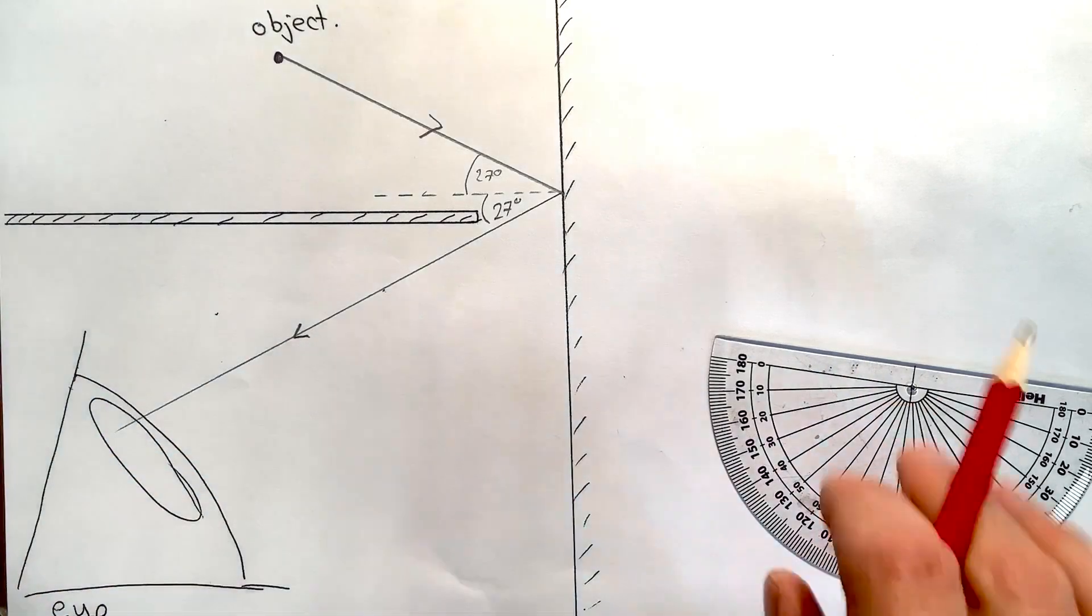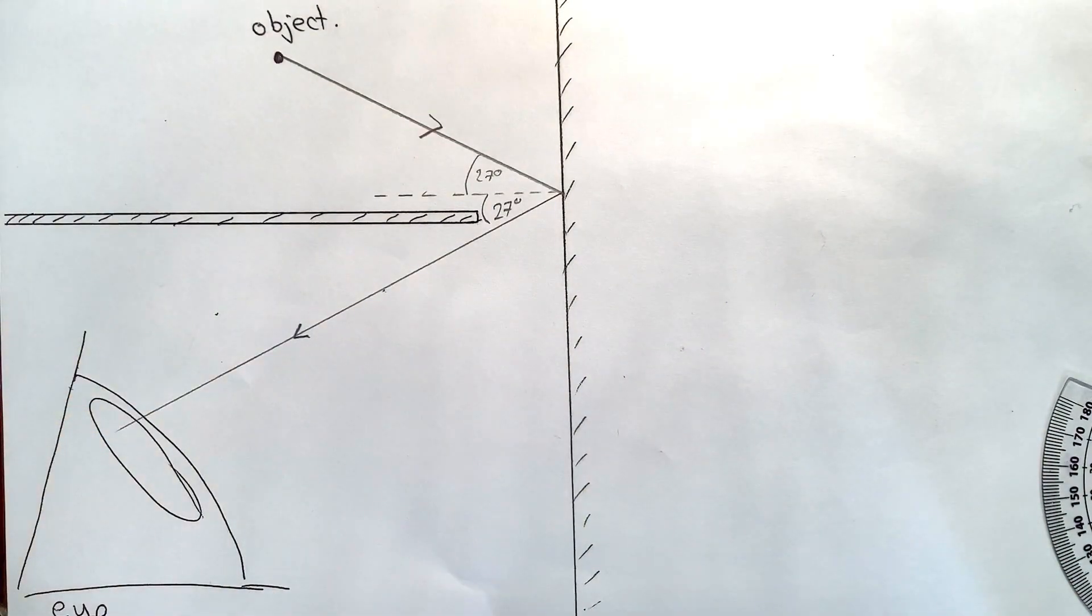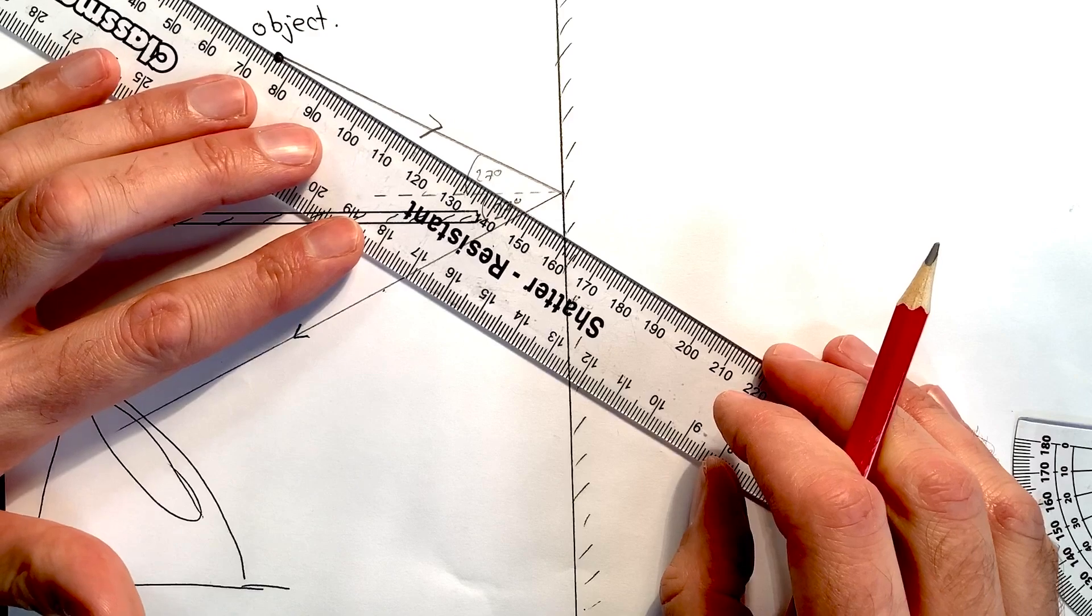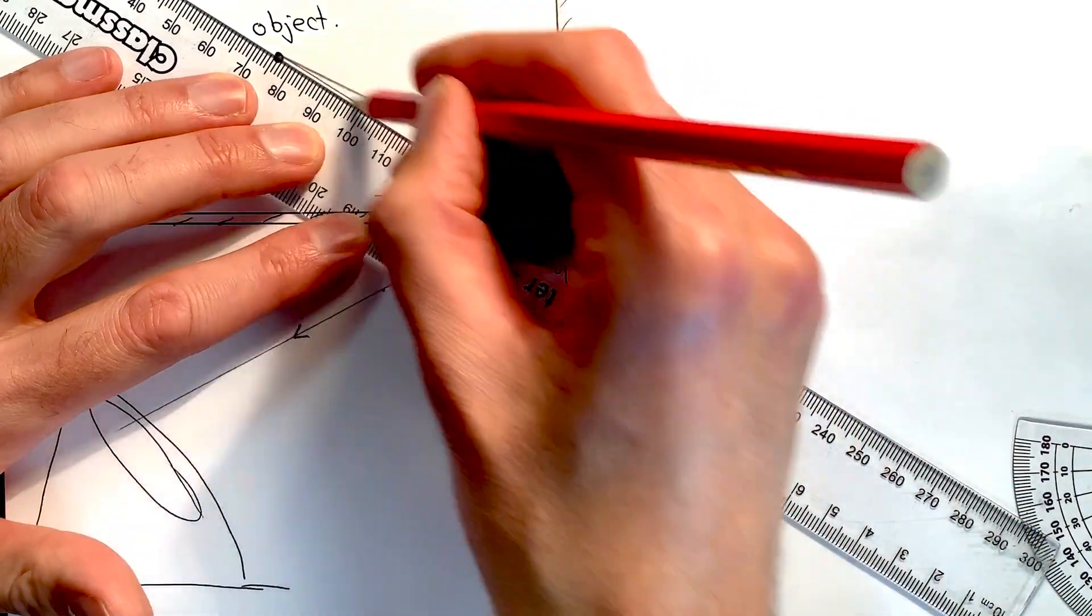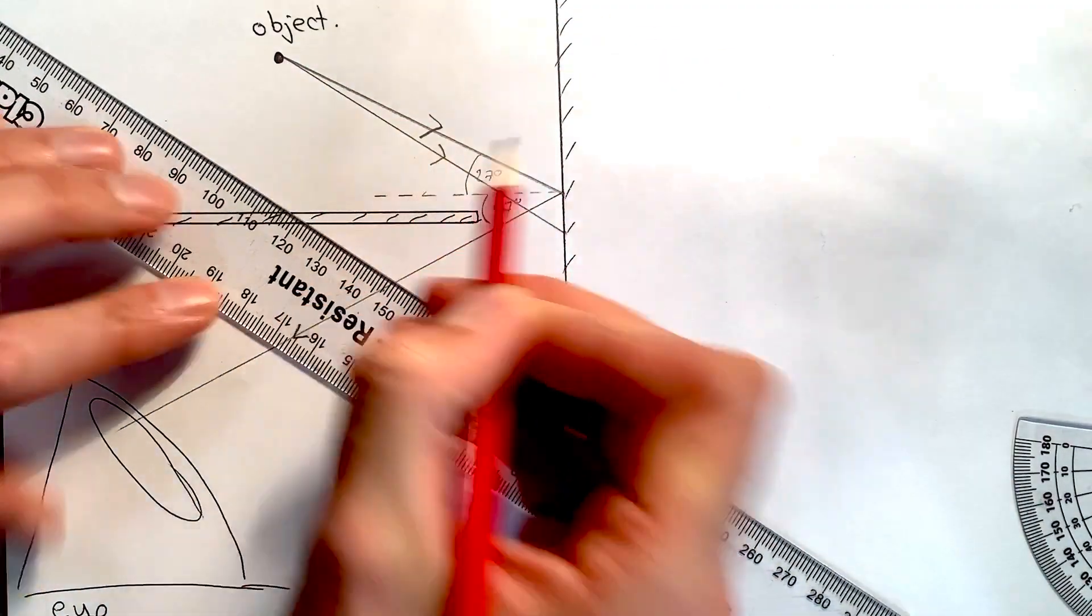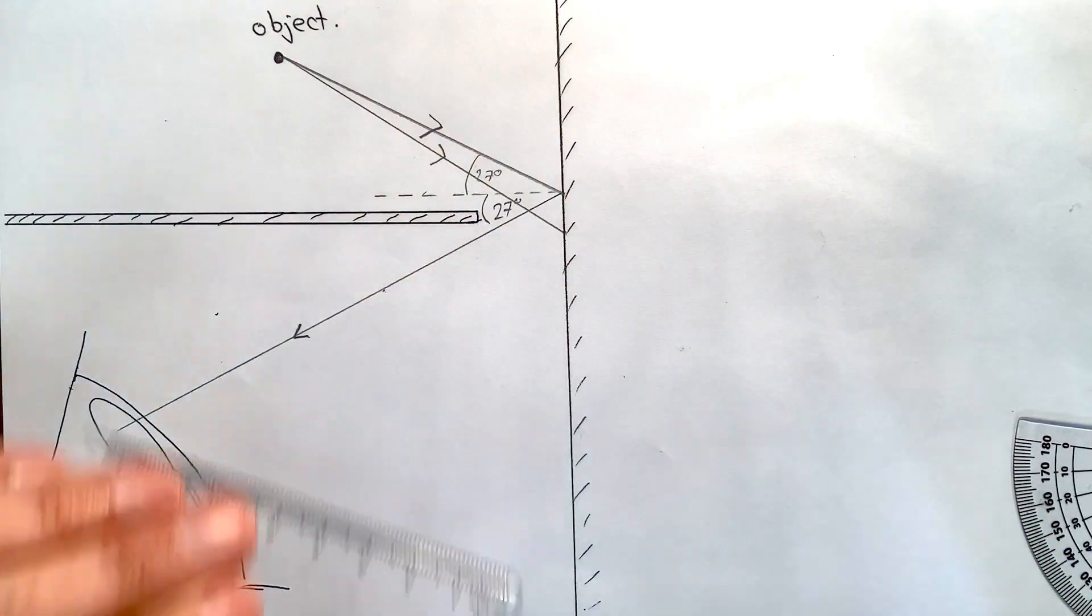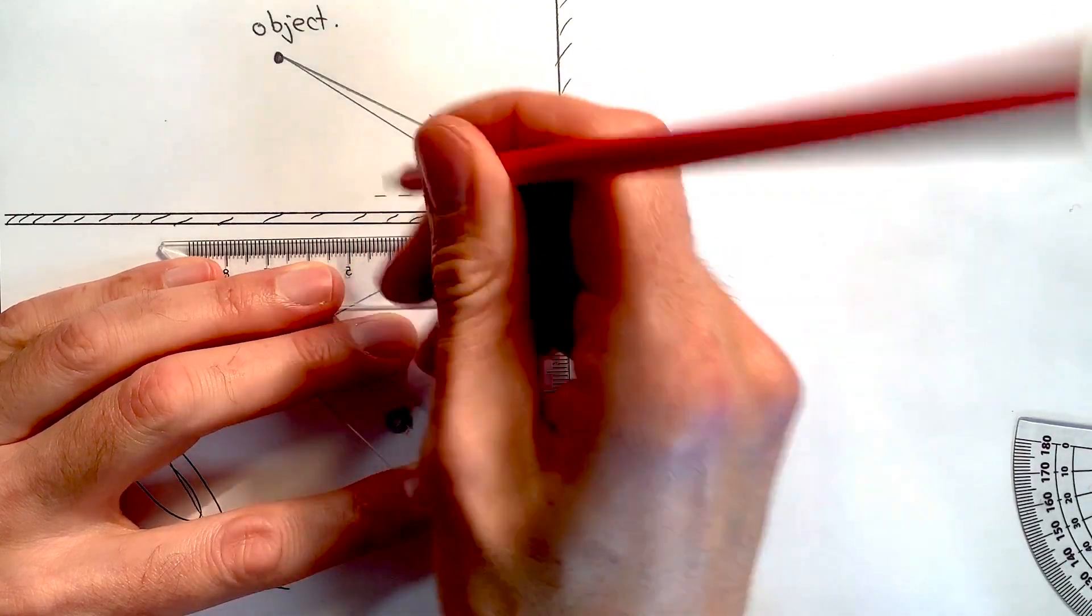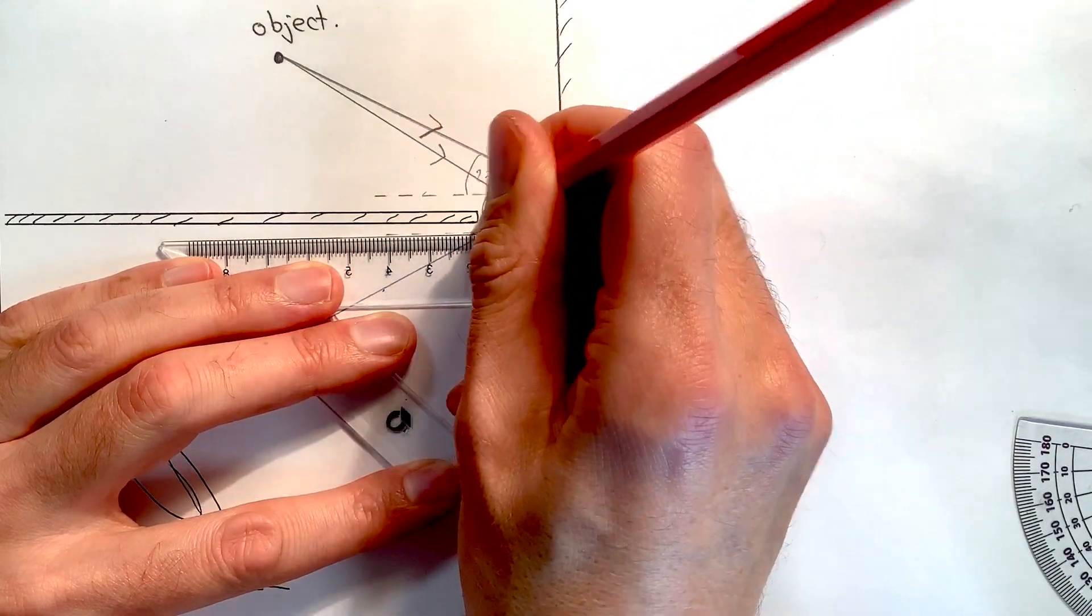Then I need to repeat exactly the same procedure but with a slightly different incident ray, so I'm going to draw that one in like this. And again, I can use my set square to draw in a normal with a dotted line.